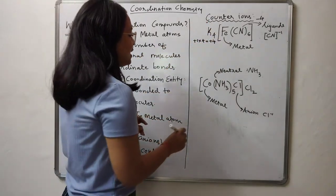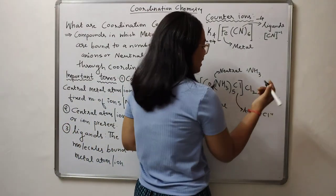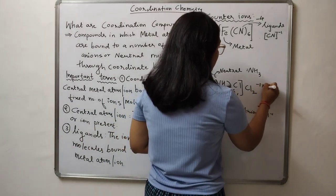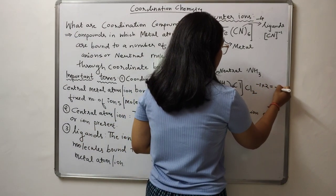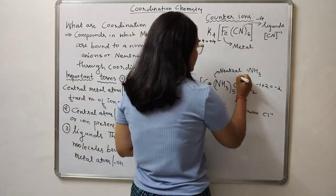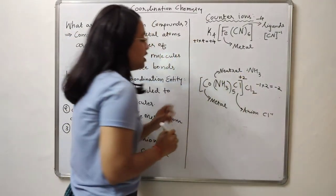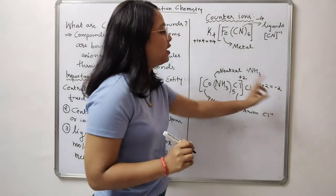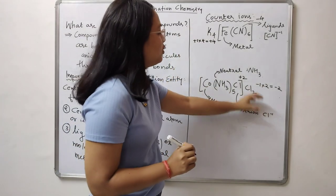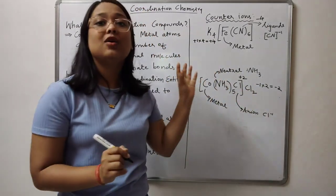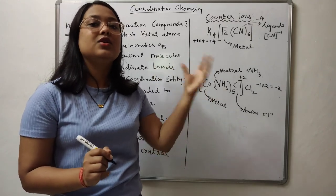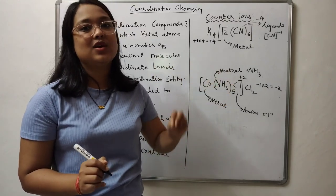Similarly, in the second example, chloride carries a charge of minus 1, and 2 are present, giving an overall negative charge of minus 2. This means the charge on the complex is plus 2. To balance a plus 2 charge, we require a negative 2 charge. These counter ions are also called balancing ions — they are present to neutralize the overall charge on the complex.